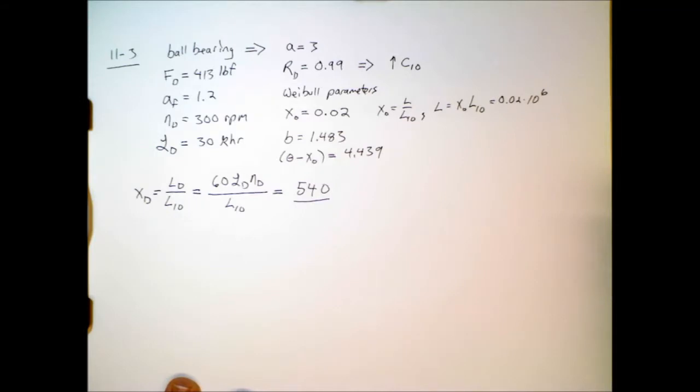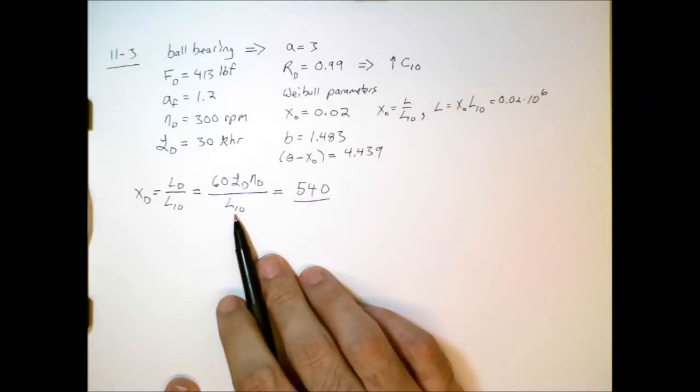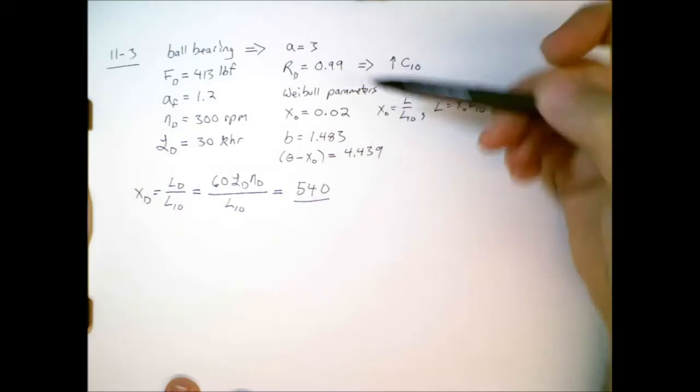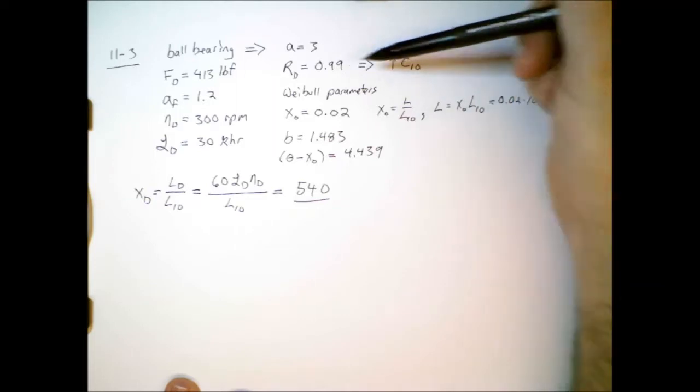Now, that's a big number. That means we need a life that's 540 times larger than the L10 value, and that combined with us needing a 99% reliability value, that means we're going to need a very large C10 value.